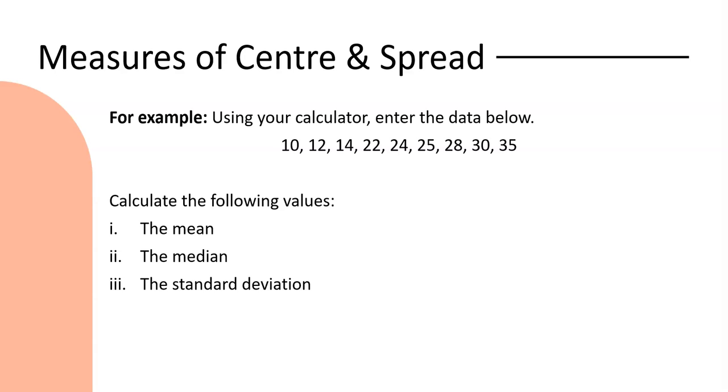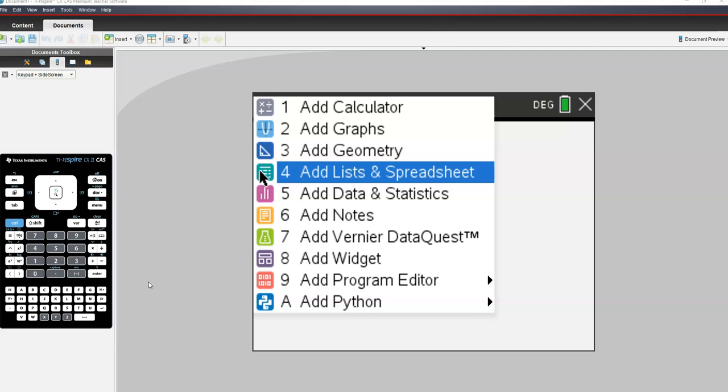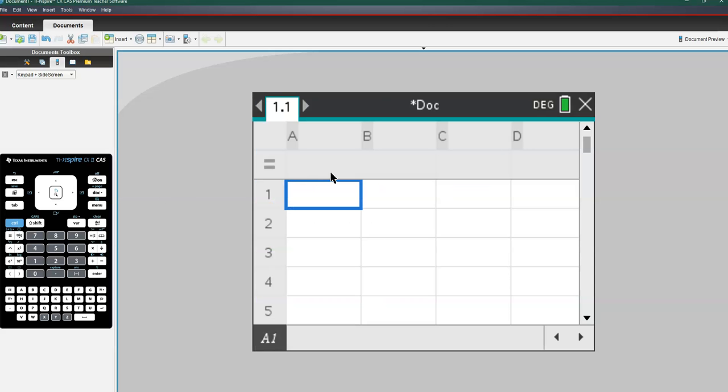For this next example we're going to have a quick refresher on how to use our calculator to both enter data but also to calculate these summary statistics. So the first thing that we need to do is start our calculator up and open up a lists and spreadsheets page. And so from the menu I'm going to select lists and spreadsheets. The first thing I should do is put in a title or a label for my data. And I haven't got anything in here that identifies it. So I'm just going to call it EG for example. It's really good practice to use a minimum of two letters so that it doesn't get confused about whether you're talking about a column or a variable that you've entered. So if I just had the letter A it would always ask me do you mean the data that's in column A or do you mean the variable you labeled A. So it's just easier to always use two letters there.